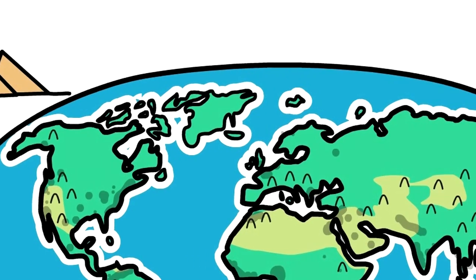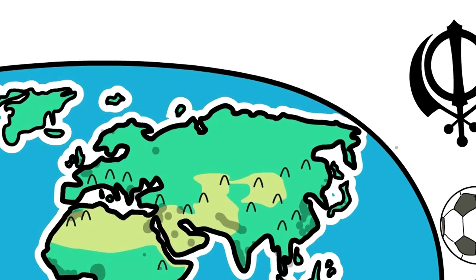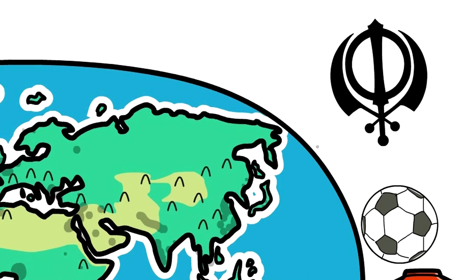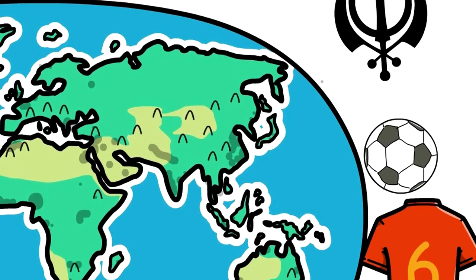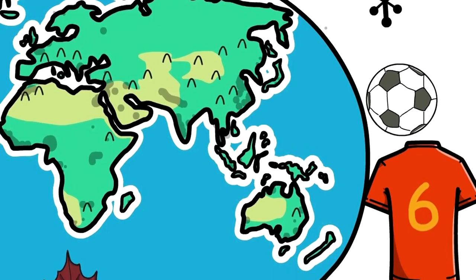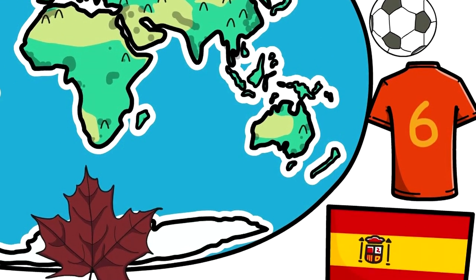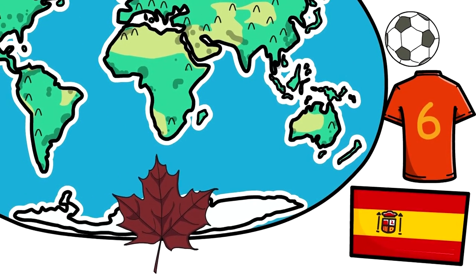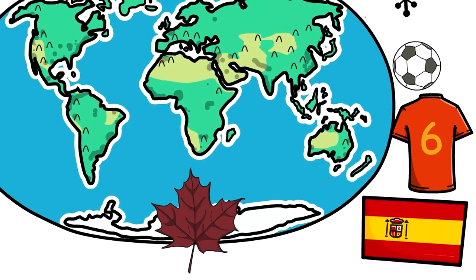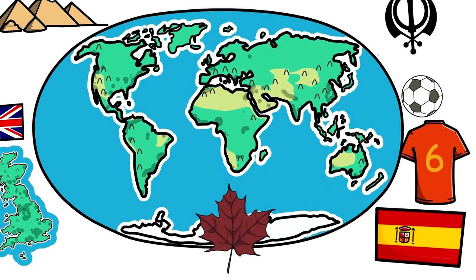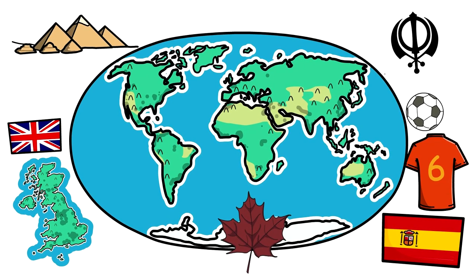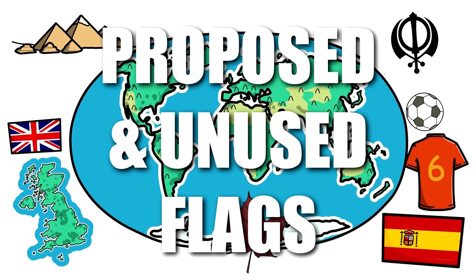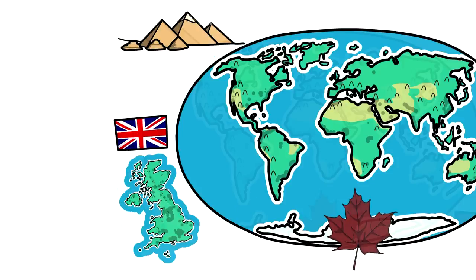The flags we have today, that represent each country in modern times, could also be different. When the time came for each flag to be adopted, most of the time there were more than one option — various proposals that were put forward, sometimes through literal contests, that could have instead been chosen to represent each country. So in this video, I want to give some attention to those flags which we have likely never seen or paid attention to — some of the proposed flags that were never used, because countries chose their current flag instead. So let's get started with the one on the thumbnail, the US flag.